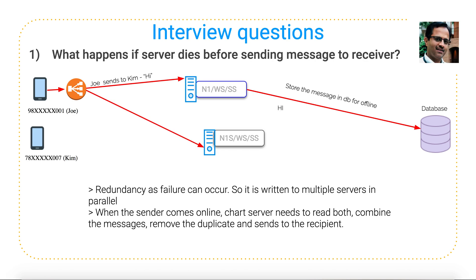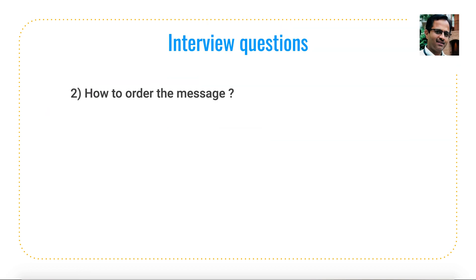In this case, even though one machine fails, the other machine can be utilized. Two messages will reach the server, and based on the unique ID generated from the client we can check whether both messages are the same. If they are the same, we consider one a duplicate, filter it out, and send one message to Kim. This is similar to a database master-slave setup — if the master fails, the slave becomes the master. Similarly, even if Node 1 fails, another node ensures messages are not lost and can reach the receiver.